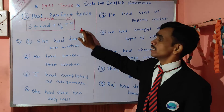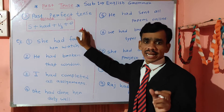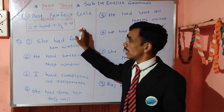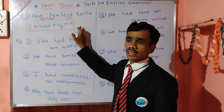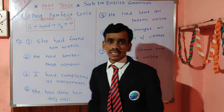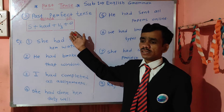And very easy formula, very short and sweet formula: Subject had V3 object. Subject had V3 — very short.